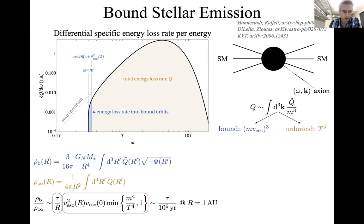There's a huge enhancement factor: τ divided by r. If τ is astrophysically long — of order the age of the solar system, ~10⁹ years, while r is 8 light-minutes — that can overcome the suppression. In fact if τ is larger than a million years, the bound-state density would dominate for m of order T.